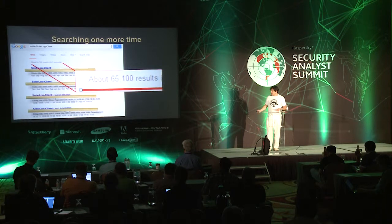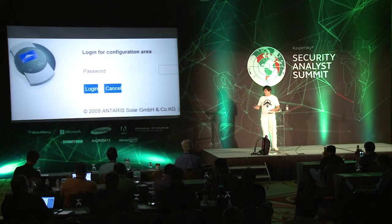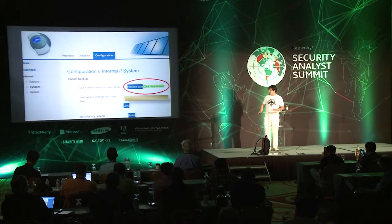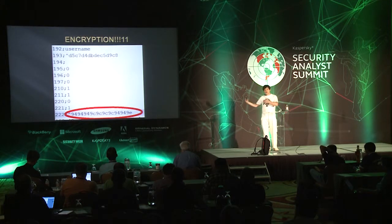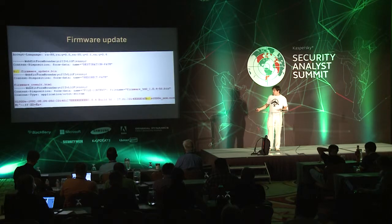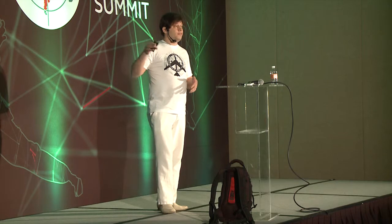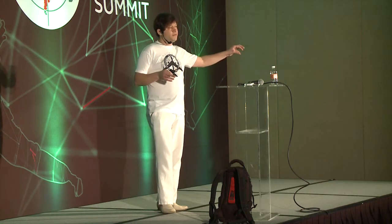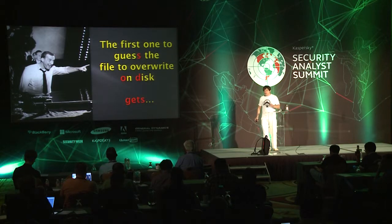This system has password protection — it has security features — but if you use a direct link to the configuration download, you can download the configuration without any password and find the encrypted password inside. One interesting thing is the firmware update process: during this process you can specify the direct name of the firmware file and to which area of the file system you want to upload it. So you can overwrite an arbitrary file on the file system.